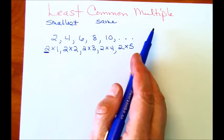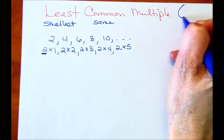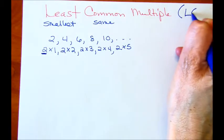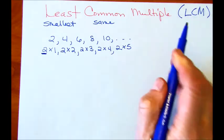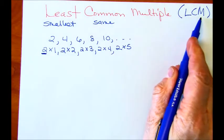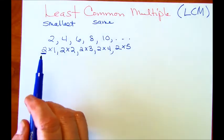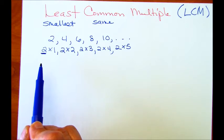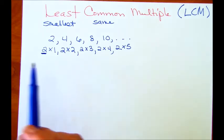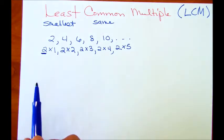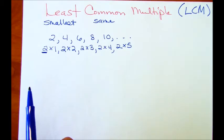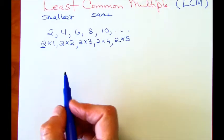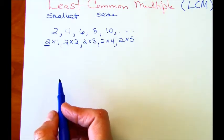Now, least common multiple, or sometimes you'll see it as LCM, is a way to find a number or a multiple that two numbers share, but it's going to be the smallest number that they both share. And so we're going to go over some examples, just so you kind of get the hang of what I'm talking about here.